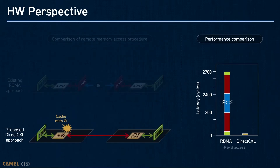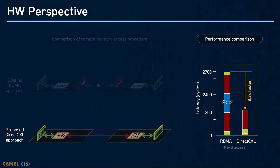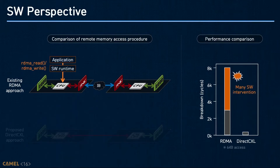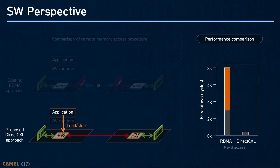For the CXL case, it only accesses remote memory when a cache miss occurs. The data stored in remote memory is loaded to the CXL controller, and the controller sends data to the host CPU. As load-store instructions can be directly handled by the CXL device, DirectCXL is about 8 times faster than RDMA. From the software viewpoint, RDMA requires additional software intervention: when an application calls an RDMA function, user-level RDMA libraries must be involved to control the RNIC. In contrast, CXL does not introduce any software overhead as it accesses remote memory using load-store instructions. As a result, the performance benefit is increased to about 24 times.